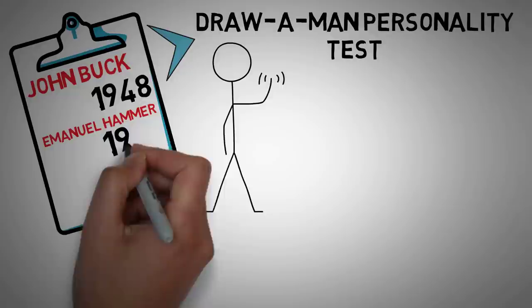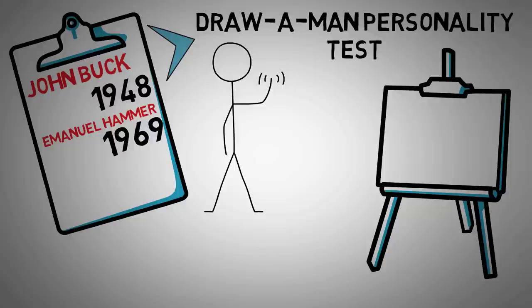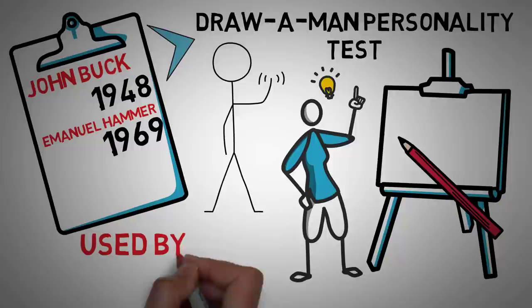The House Tree Person Test is one of the most widely used projective tests for children and adults and is suitable for any individuals age 3 and older. The test is used by clinical psychologists, occupational therapists, and teachers.